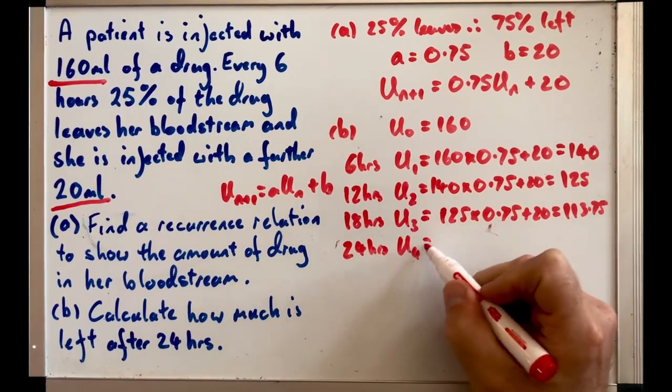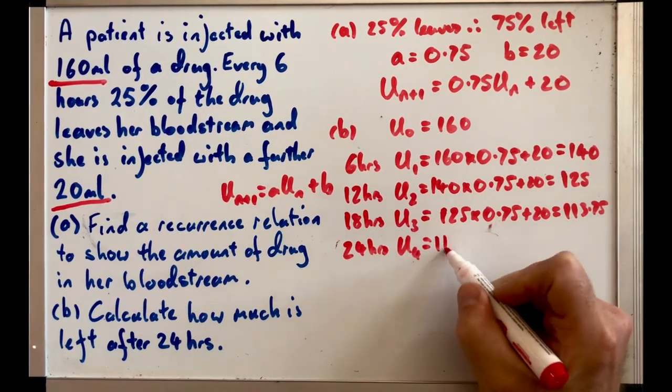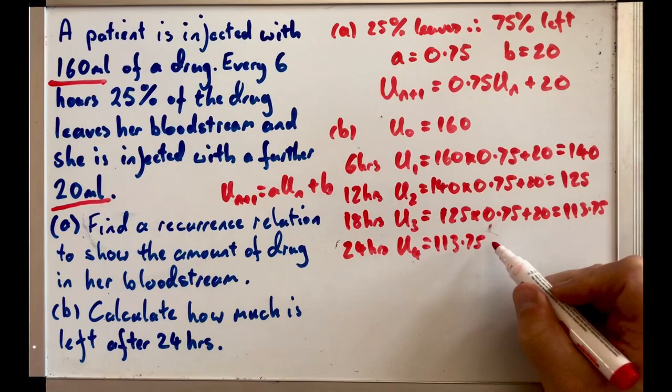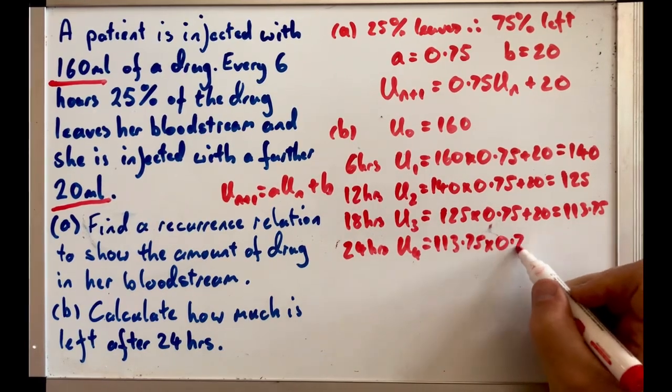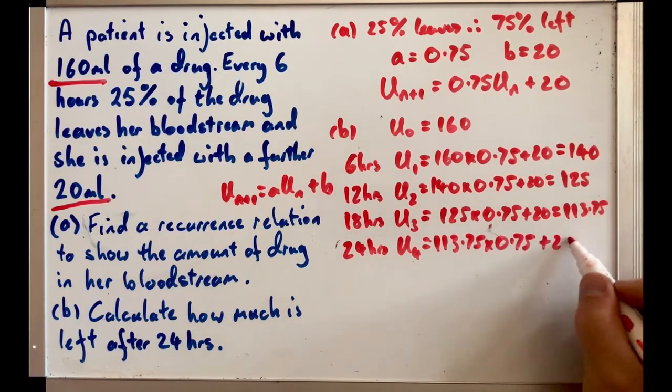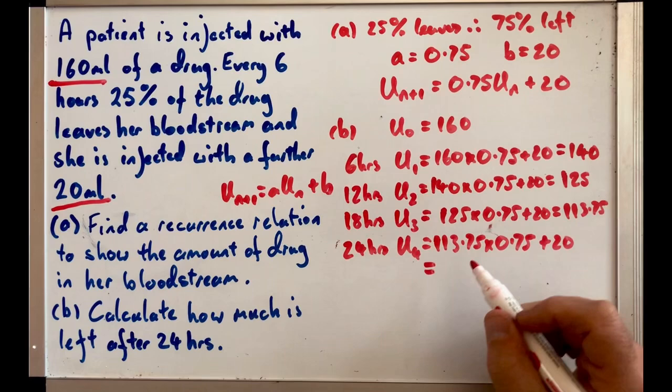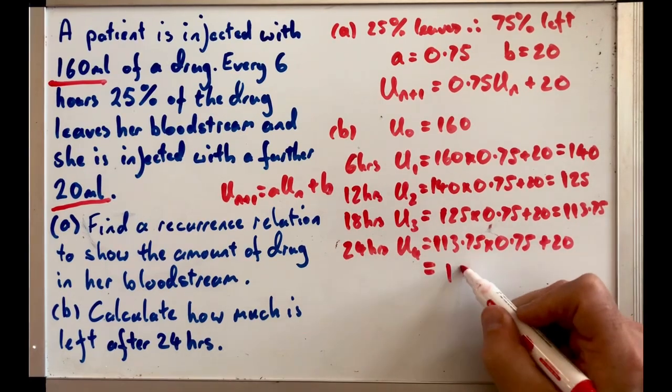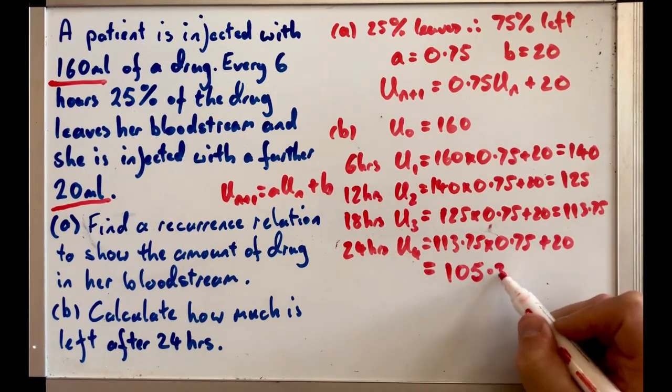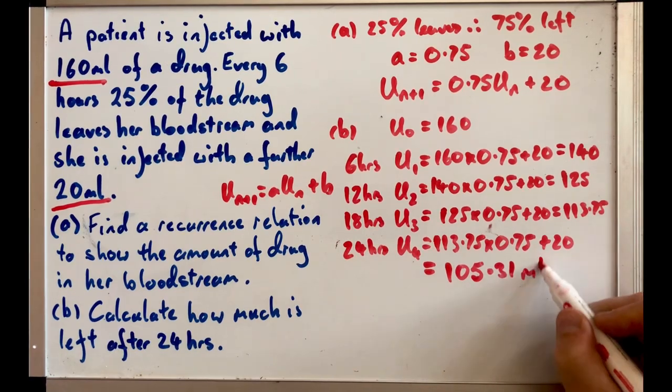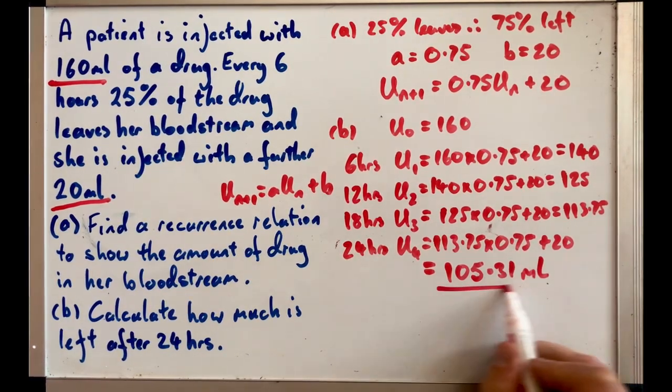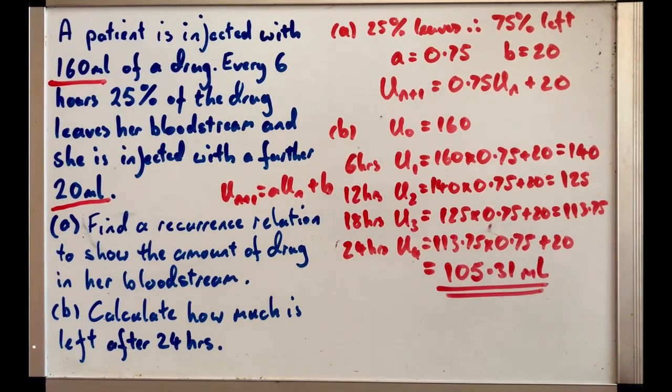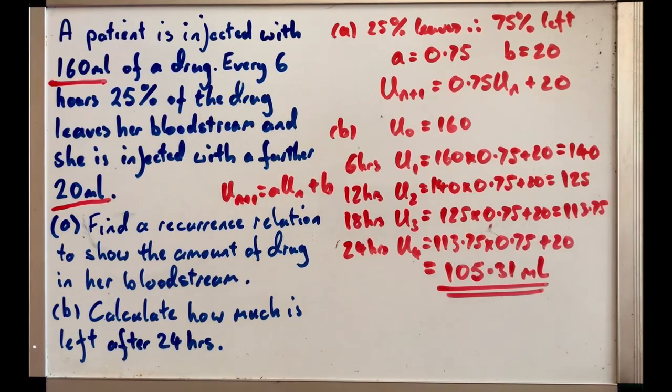Lastly, after 24 hours, U₄ is going to be 113.75 times 0.75 plus 20 which gives me if you round it 105.31 milliliters. Make sure you've got the units in as well. So that's what's left after 24 hours.